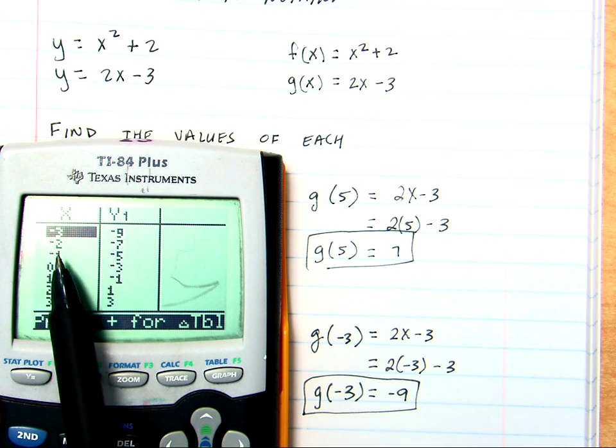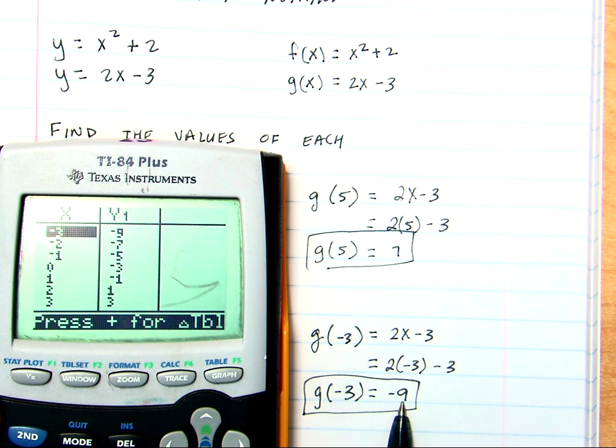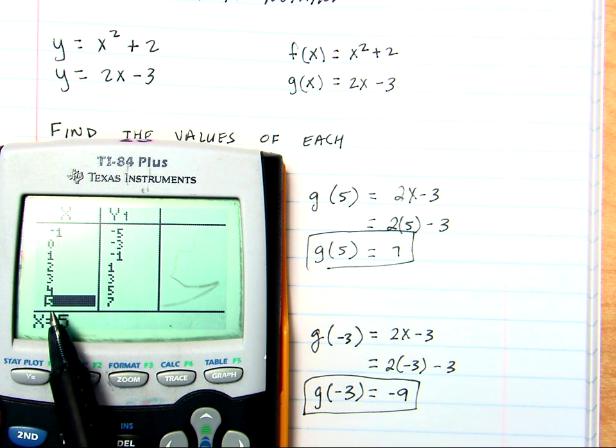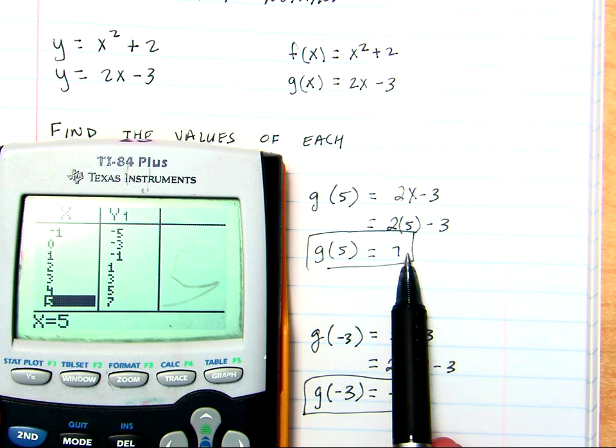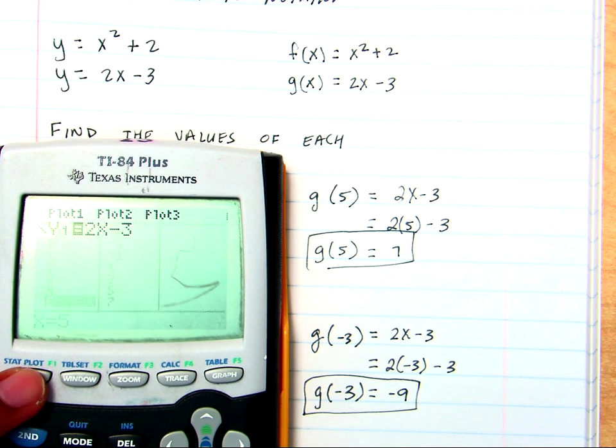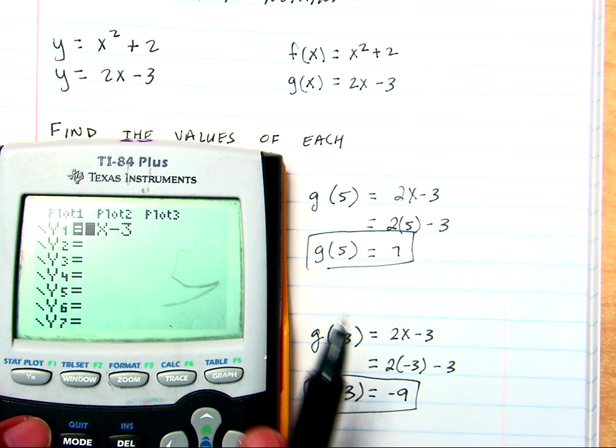Okay. So, negative 3 better be negative 9. This time we typed it in right. There's our answer. Okay. We're going to go down to 5. 5 should be 7. 5, 7. We did it correctly. So, remember anytime you want to check it in the calculator go to y equals then the table.